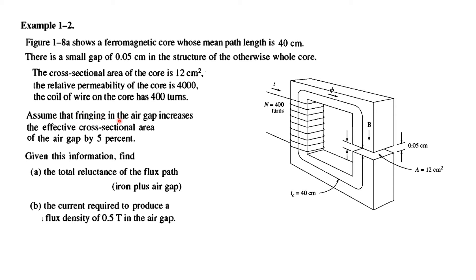Assuming that fringing in the air gap increases the effective cross-sectional area of the air gap by 5%. When the flux lines pass from north to south through the air gap, they try to diverge slightly. So this area is more than the core area — the increase in the cross-sectional area is 5% more than the 12 cm². We have to keep this point in mind when working with the air gap portion.